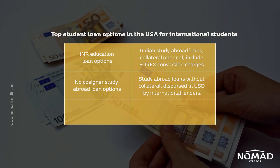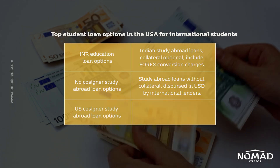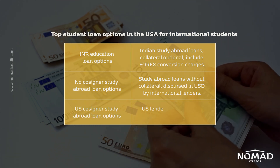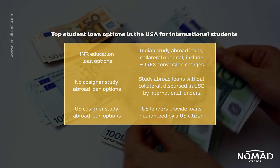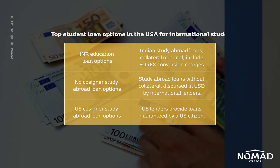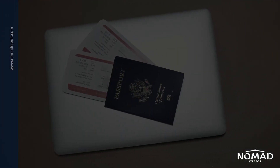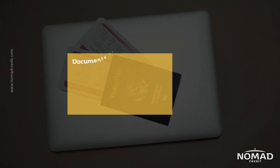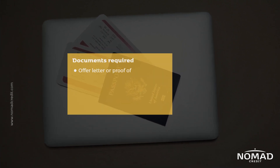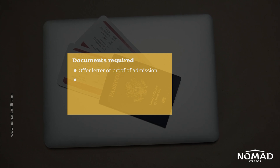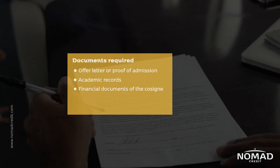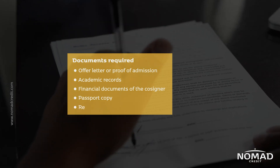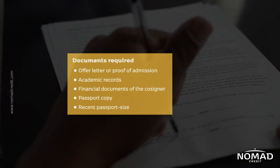US cosigner study abroad loan options: US lenders provide loans guaranteed by a US citizen. Documents required include an offer letter or proof of admission, academic records, financial documents of the cosigner, passport copy, and recent passport size photographs.